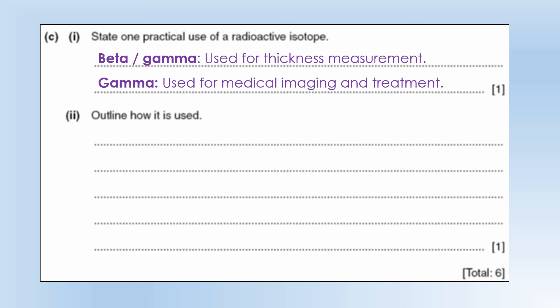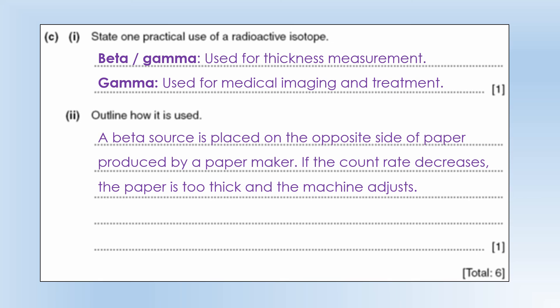To outline how it's used, so I'm going to talk about the thickness measurement. So paper thickness can be measured using a beta source. So what you do is you put a source on one side of paper, a detector on the other, and if the paper gets too thick, then the count rate decreases, and then the machine adjusts to thin the paper out. So it's an automatic detection device.